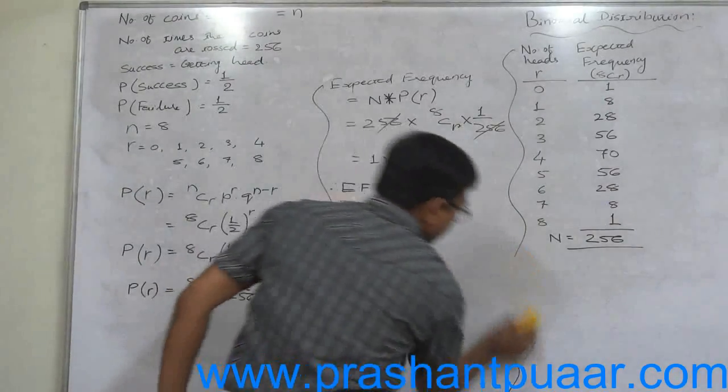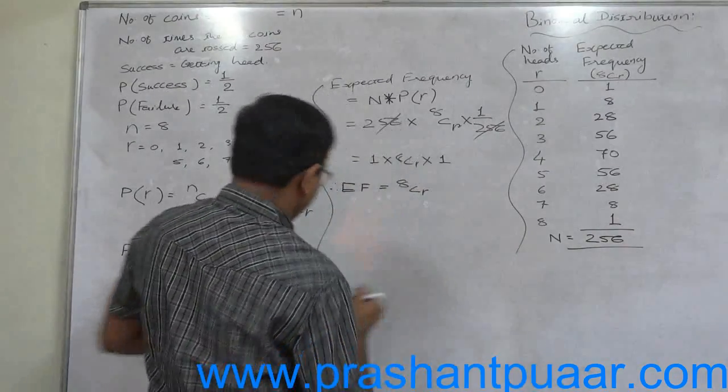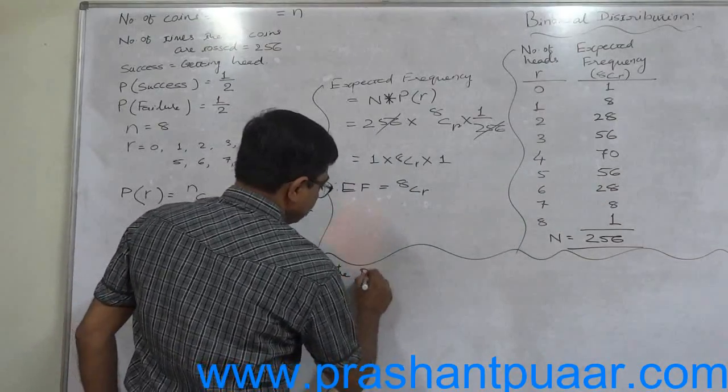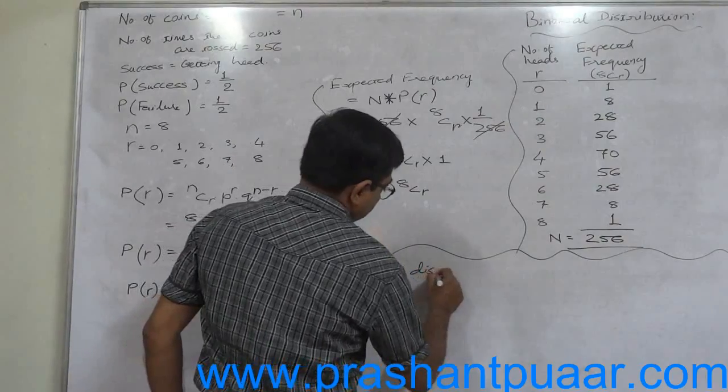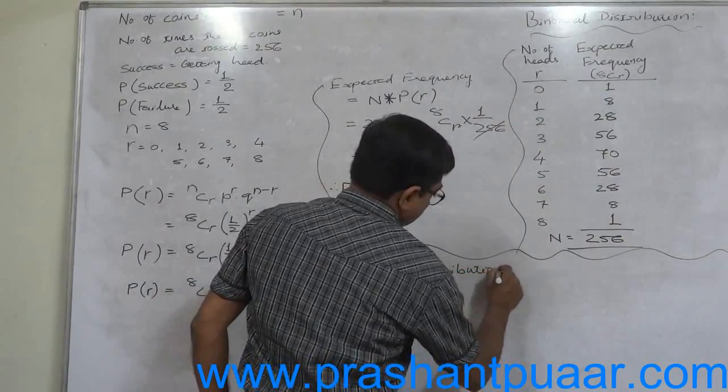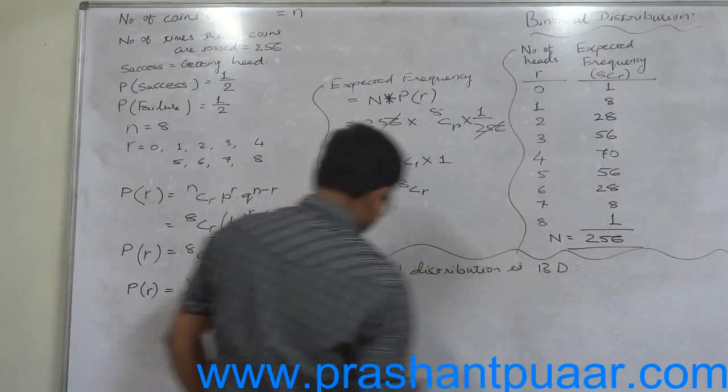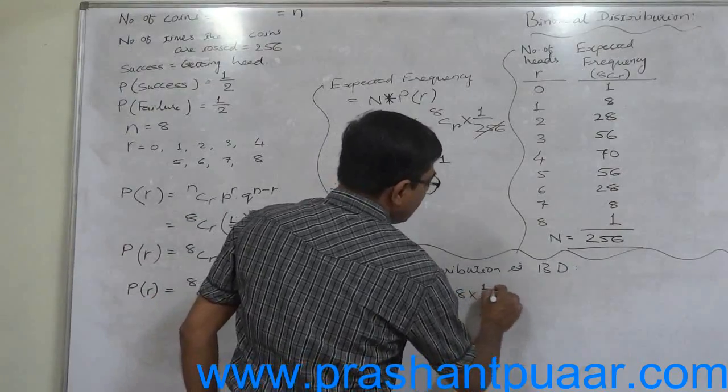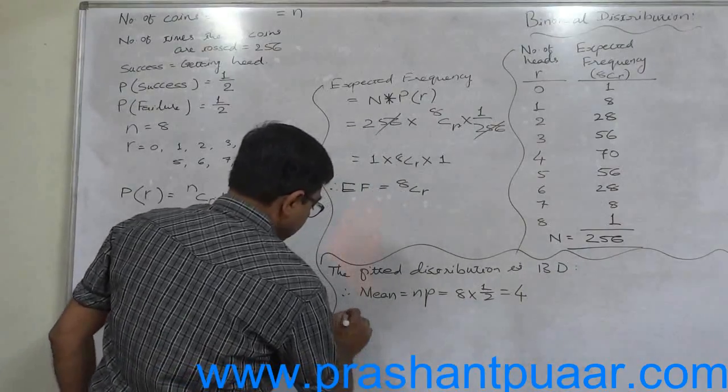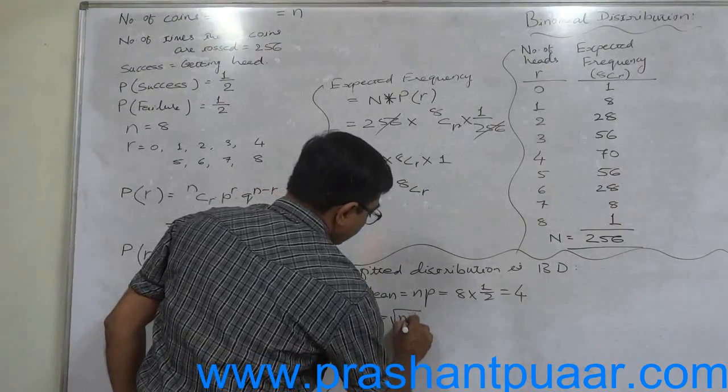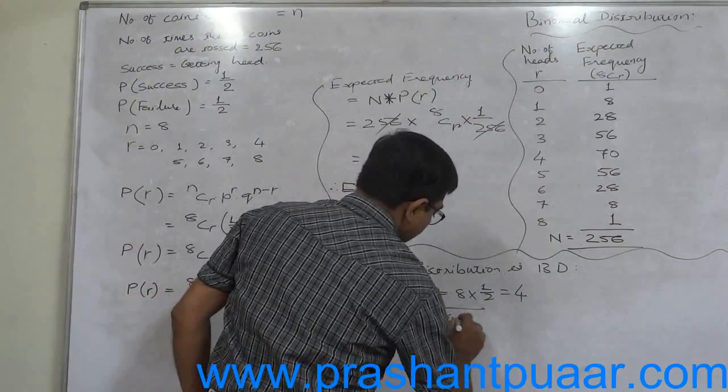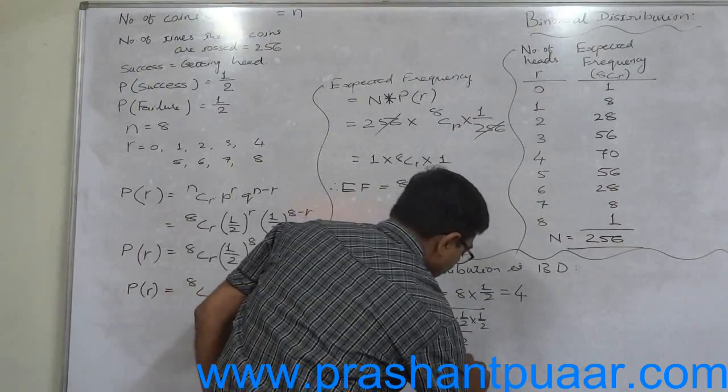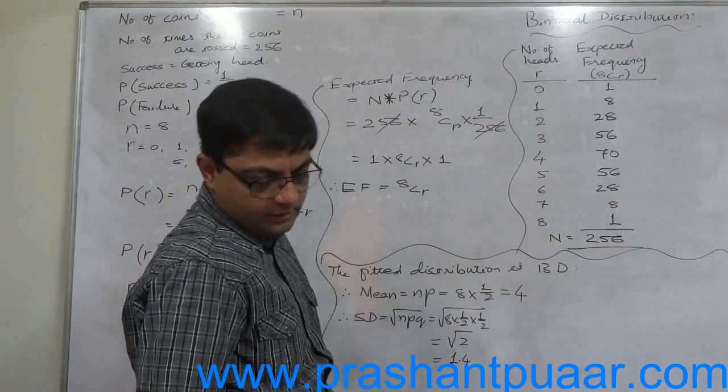Now we require to get the mean and standard deviation of the fitted distribution. That means binomial distribution. The fitted distribution is binomial distribution. Therefore mean will be NP, that is 8 into half, that is 4. Standard deviation will be under root NPQ. That is under root 8 into half into half. That means under root 2, that means approximately 1.41.